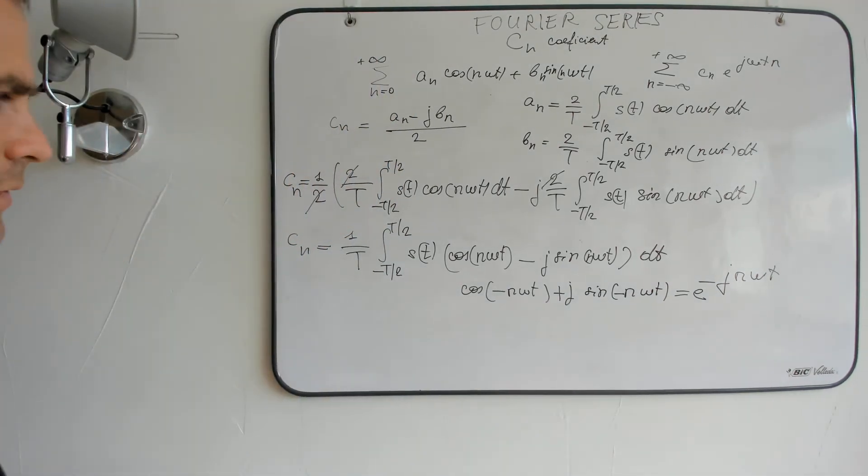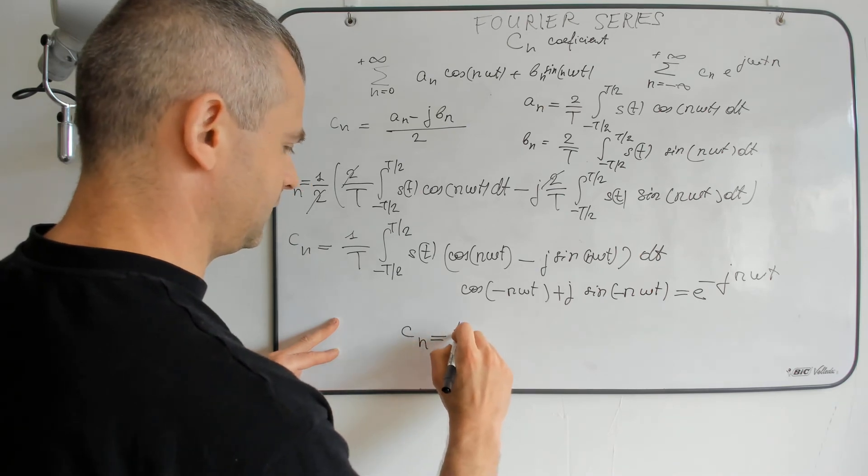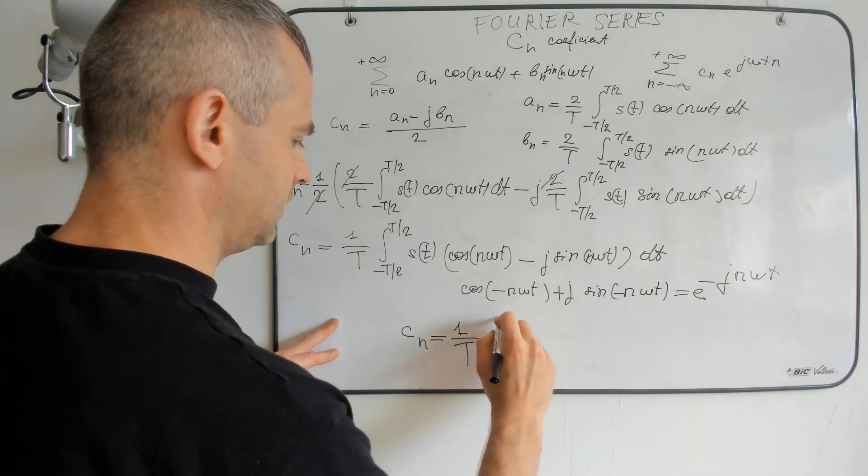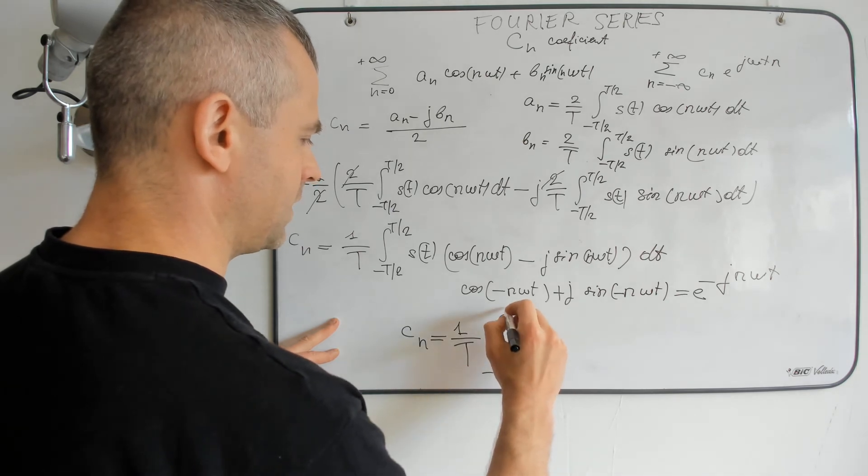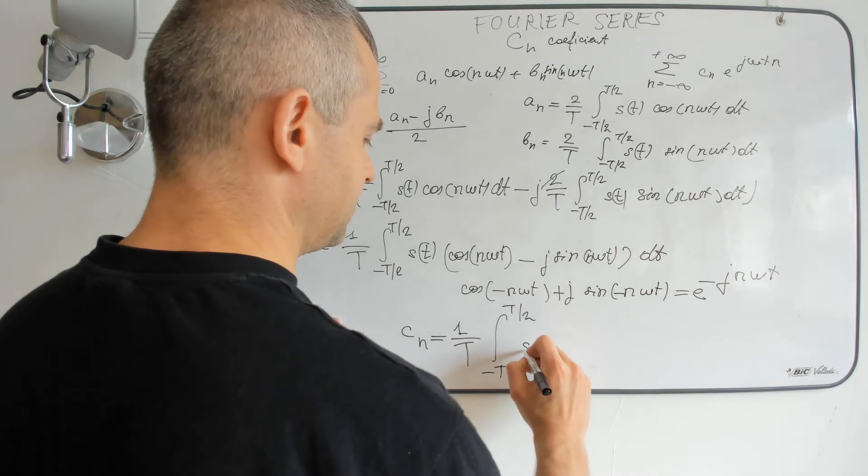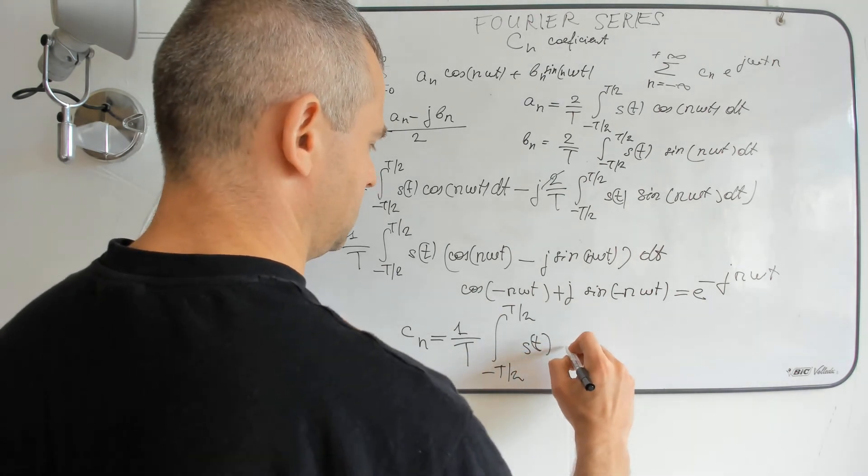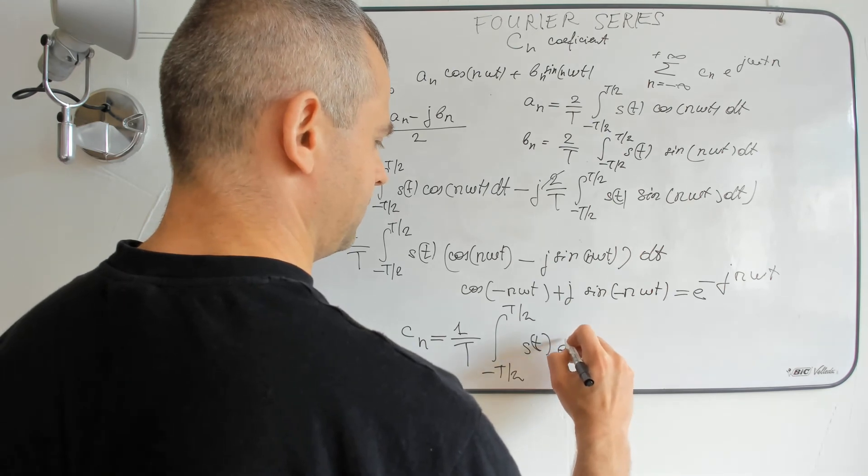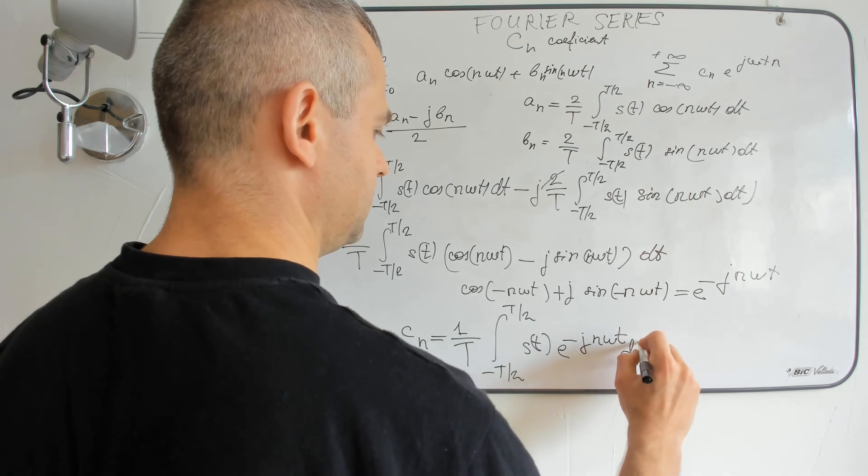So the final relation of Cn is 1 divided by T integral from minus half of a period to half of a period of s(t) exponential of minus j n omega t dt.